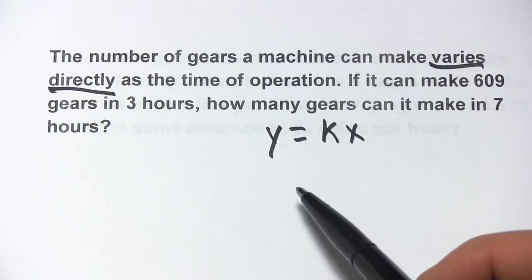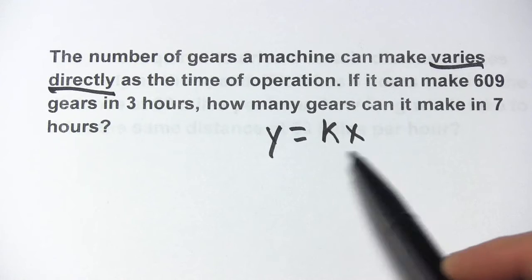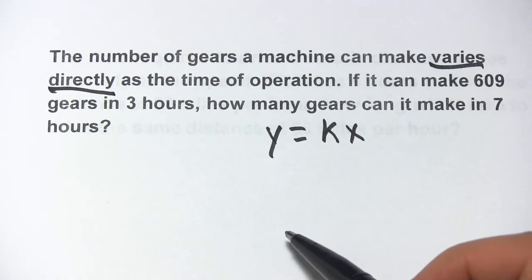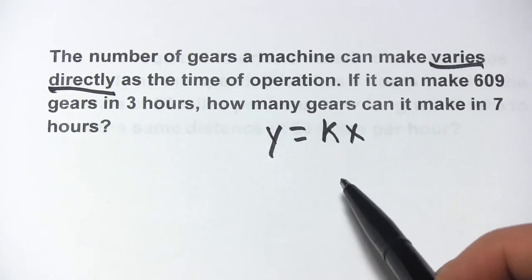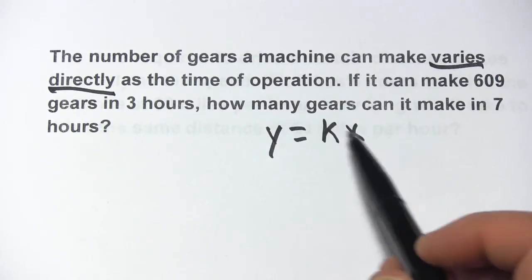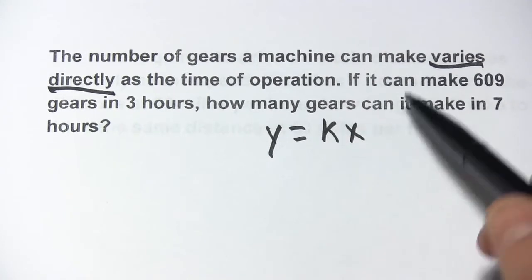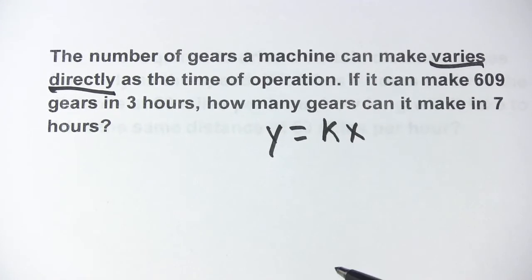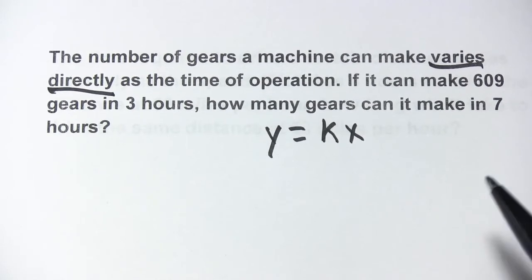The way this works is you set up an equation with some numbers for y and x, you find out what the constant of variation is by solving for it, then you usually use that constant of variation to solve a second problem. Let me show you how that works here.